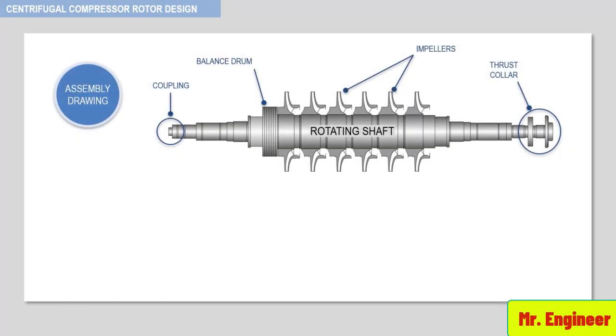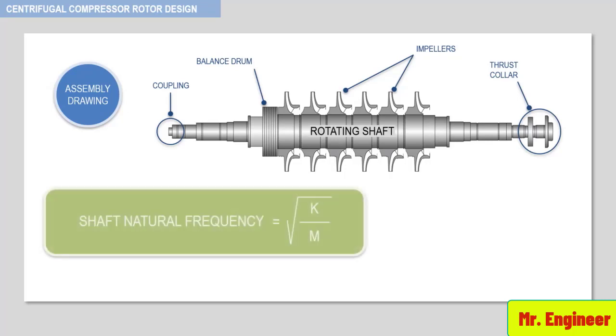Referring again to the assembly drawing of a typical centrifugal compressor rotor, the rotor natural frequency is directly proportional to the shaft stiffness by the following relationship, where K is the shaft stiffness and M is the mass of the rotor. Rotor stiffness is proportional to bearing span divided by the major shaft diameter, as seen here.